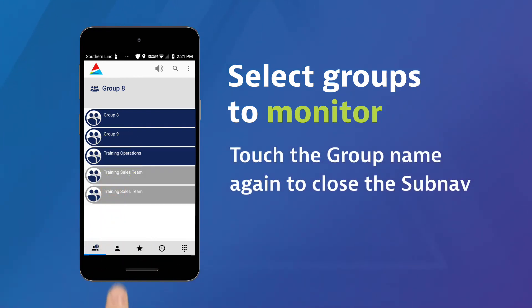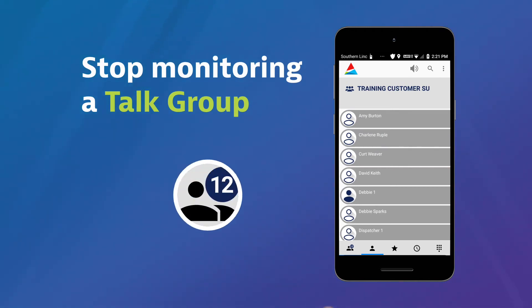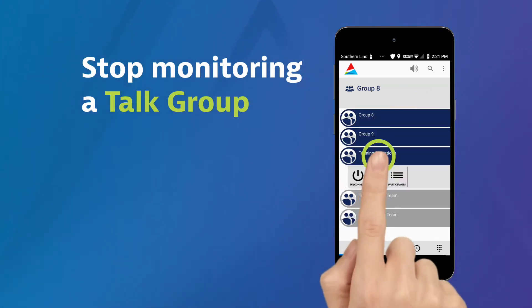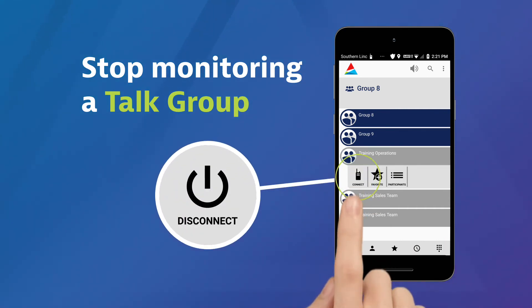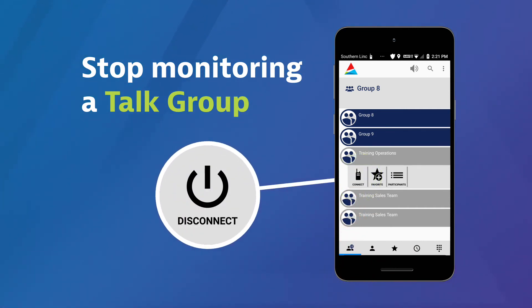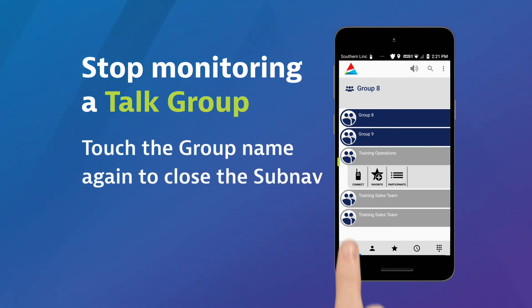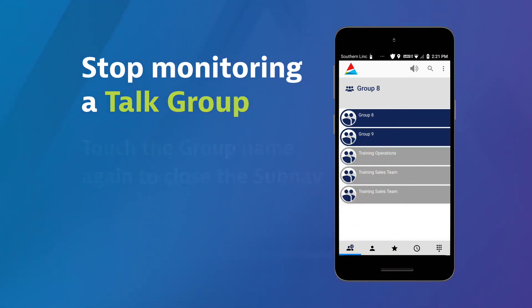Touch the group again to close the sub-nav. To stop monitoring a group, return to the Groups tab and touch the group name. From the sub-nav, touch Disconnect to stop monitoring the group and the group will return to grey. Touch the group name again to close the sub-nav.